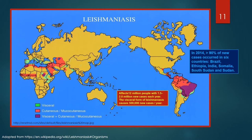Different leishmaniasis clinical syndromes occur in different regions. Cutaneous disease is most common in Afghanistan, Algeria, Brazil, Colombia, and Iran; mucocutaneous disease in Bolivia, Brazil, and Peru; and visceral disease in Bangladesh, Brazil, Ethiopia, India, and Sudan. Leishmaniasis is found throughout the Americas from Northern Argentina to South Texas, though not in Uruguay or Chile, and has recently been shown to be spreading to North Texas. It is also known by various names in Latin America, including Papa Lomoyo, Alcera de los Chicleros, and Chiclera.